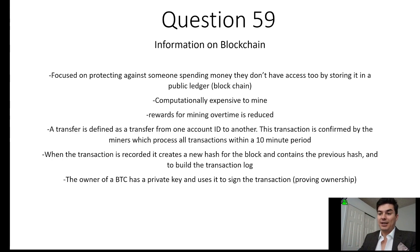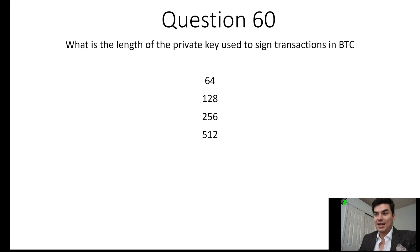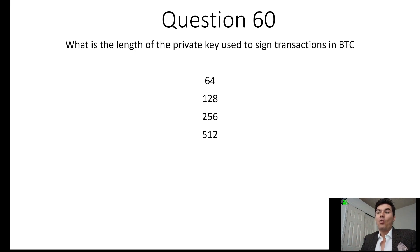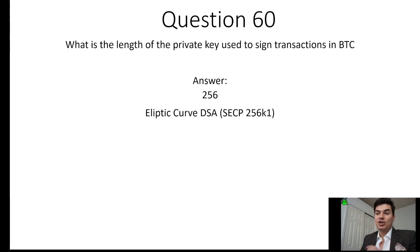Question 60: What is the length of the private key used to sign a transaction in Bitcoin? The length is 256 bits, and it specifically uses the elliptic curve digital signature algorithm (ECDSA).